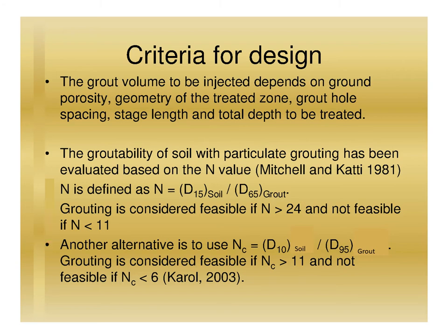Another alternative is to use N sub c, defined as N_c = D10 of soil divided by D95 of grout. Grouting is considered feasible if N_c is greater than 11 and not feasible if N_c is less than 6.